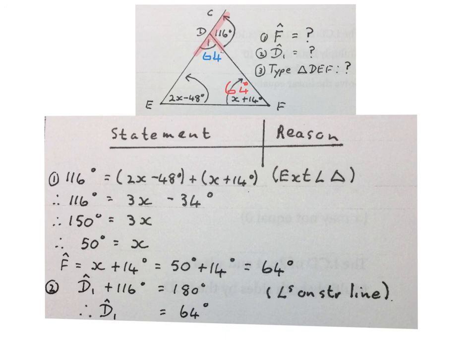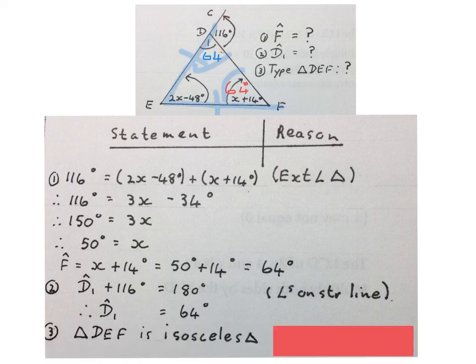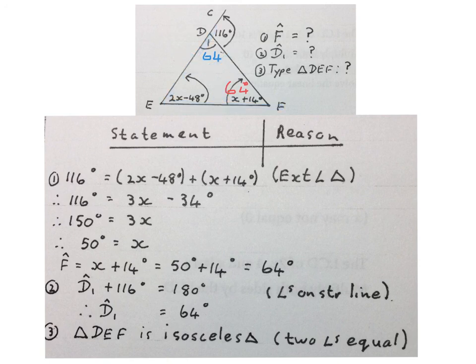The last question asks what type of triangle is triangle DEF. The answer is triangle DEF is an isosceles triangle, but then I must give a reason. Your reason is two angles equal. In an isosceles triangle, two sides are equal and the two angles opposite those sides are equal. Please stop the video and get your head around this solution.